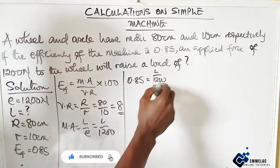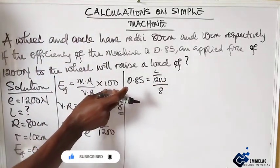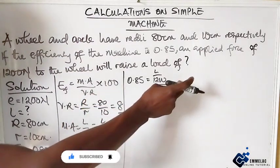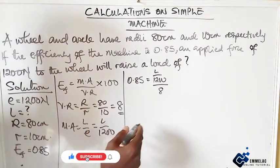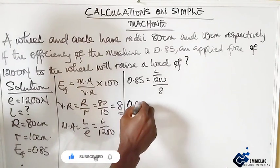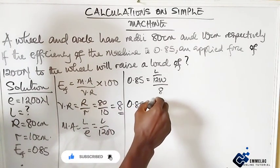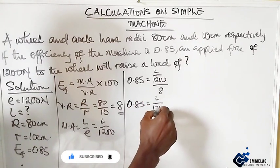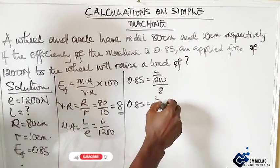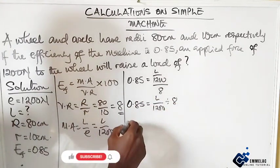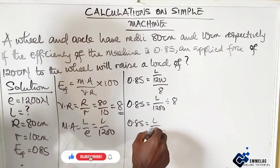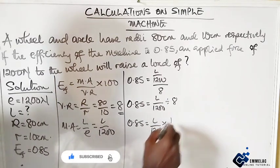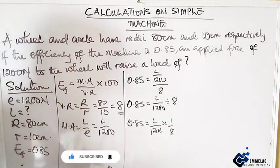Here we have 8. There's no need for this 100 here because I've resolved the percentage to be 0.85. So here we have 0.85 equals load over 1200 divided by 8. So we have 0.85 equals load over 1200 times 1 over 8.